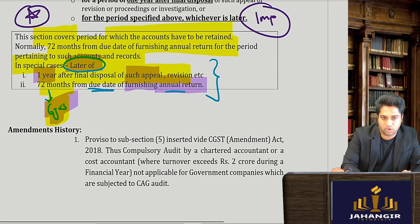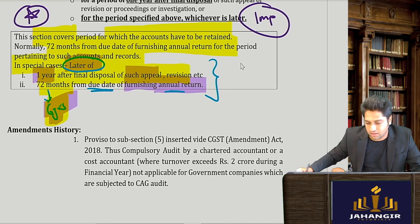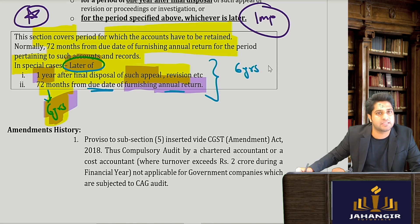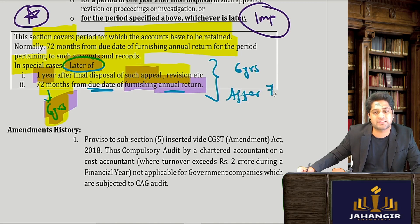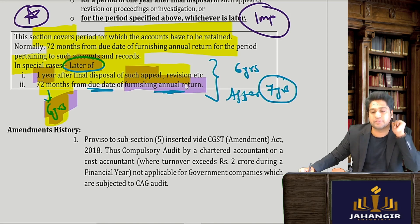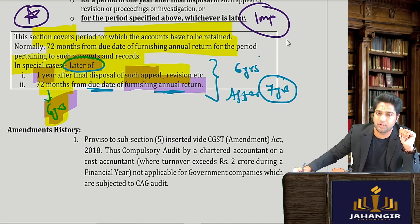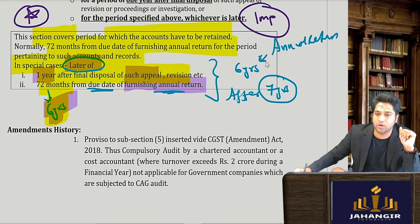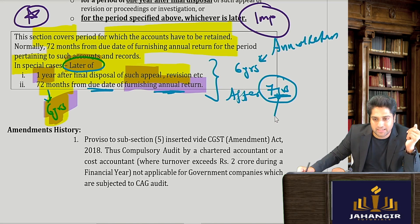Let's take an example. The appeal is disposed of seven years from the date of furnishing the annual returns. So from the annual returns, six years pass — but the appeal continued for another year beyond that. In this case, you take one year from the date the appeal is disposed of, which would be the eighth year from furnishing returns.